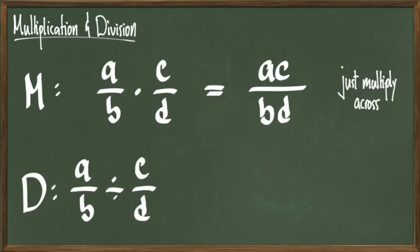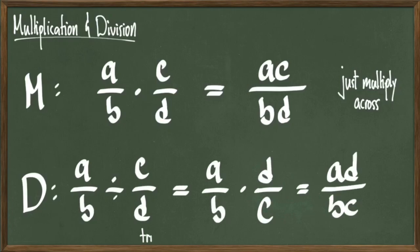Division is pretty straightforward as well. If I have a over b divided by c over d, what I need to do is change this into a multiplication problem. How I do that is I leave a over b as it is, but I take c over d and I flip that fraction upside down, change the division sign to a multiplication sign, and then get the new problem, a over b times d over c. Then multiply across to get a times d over b times c.